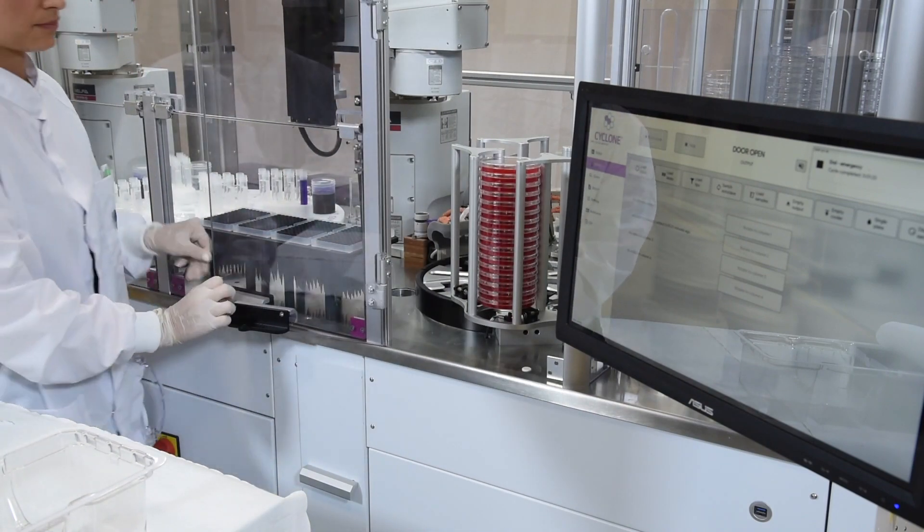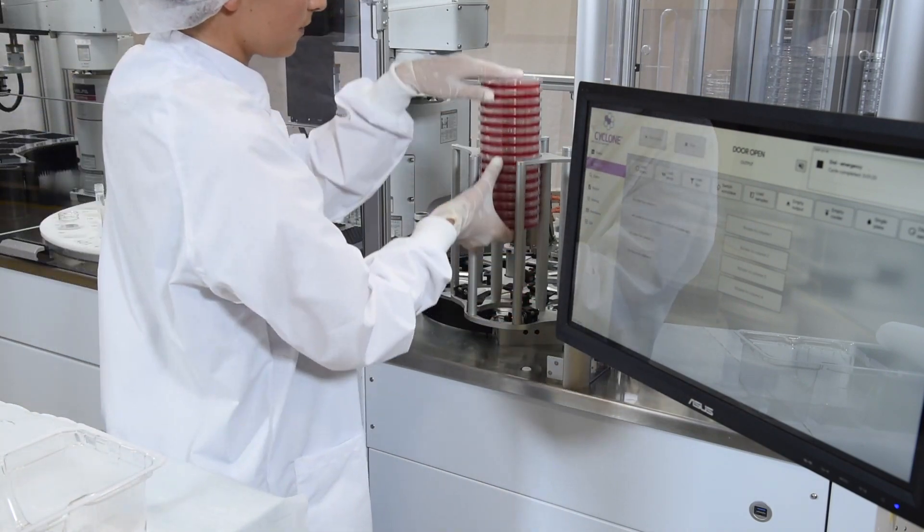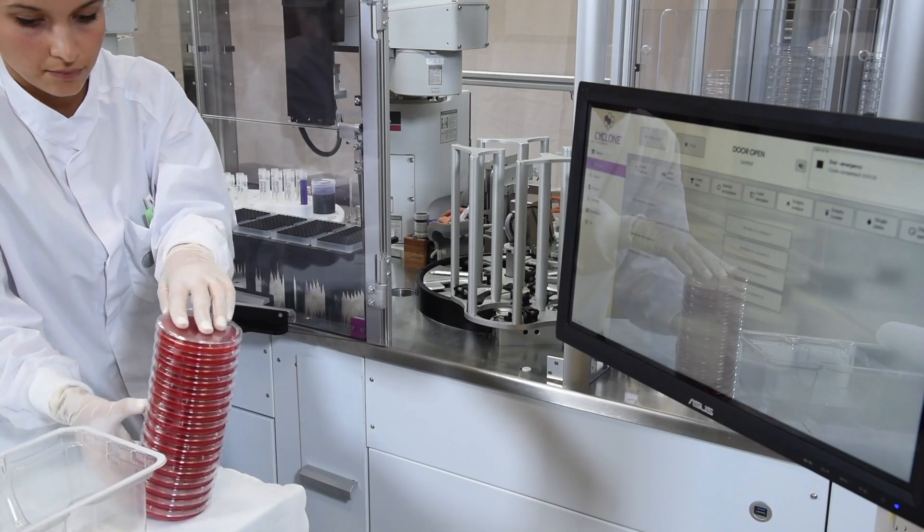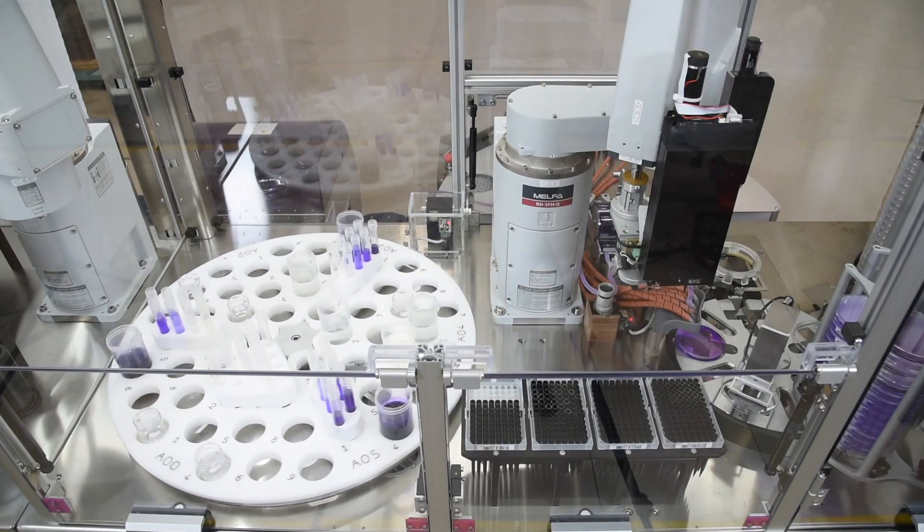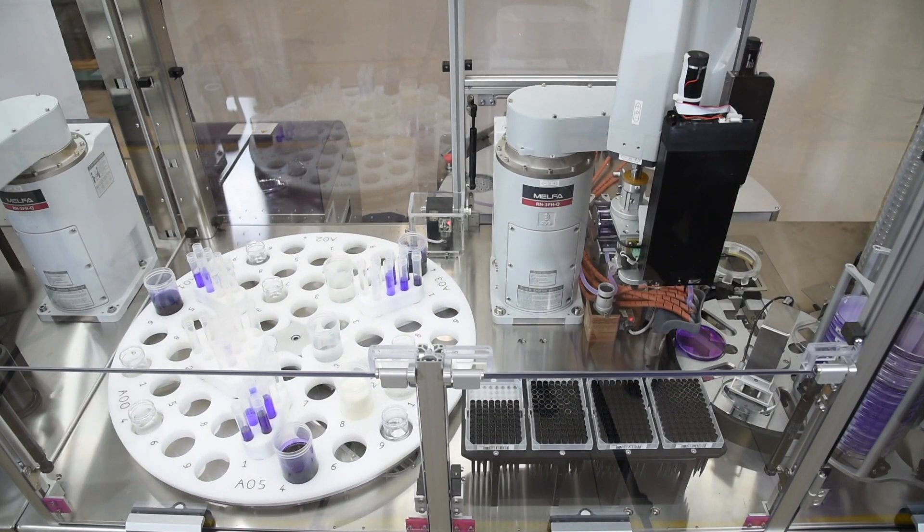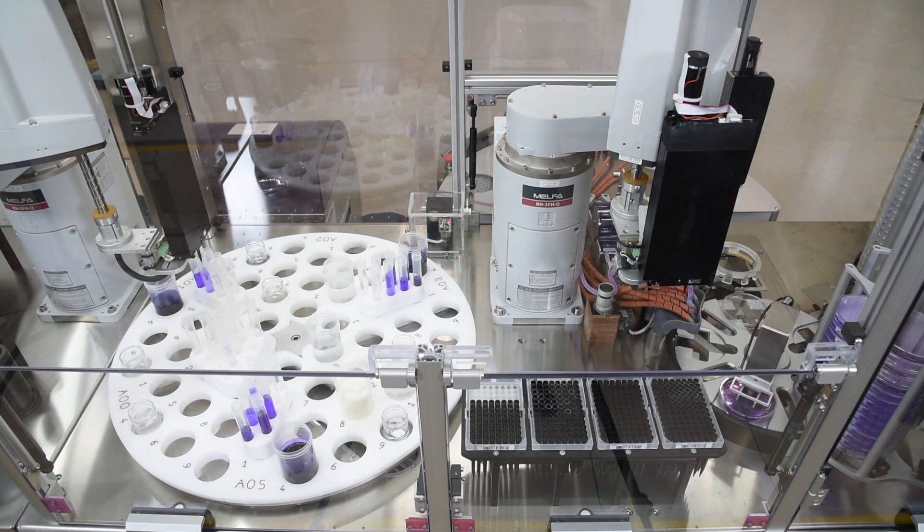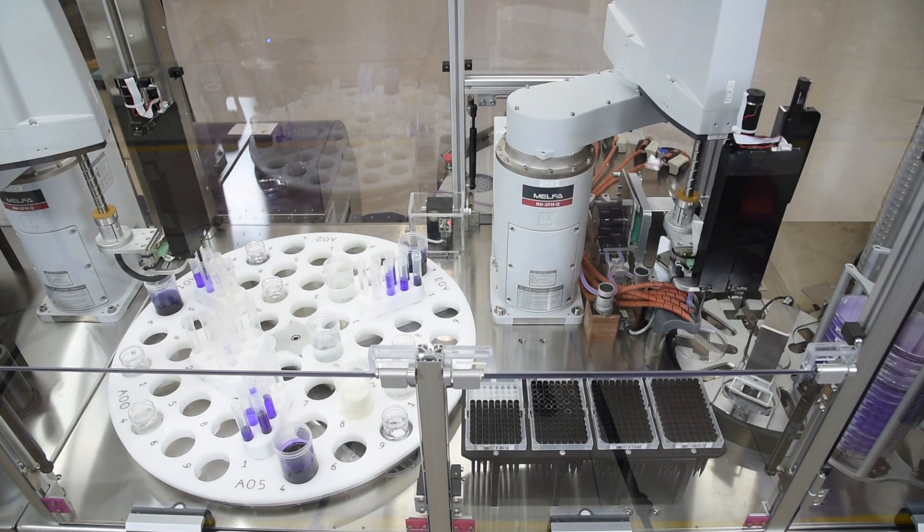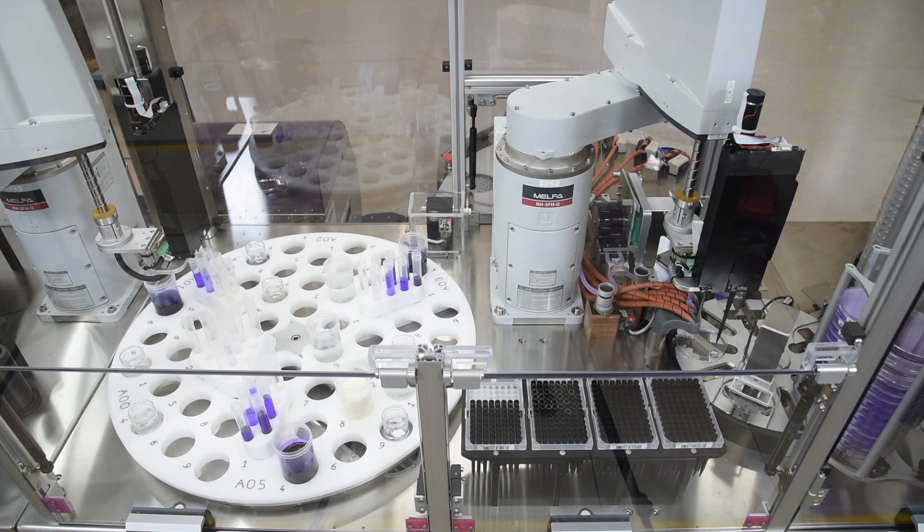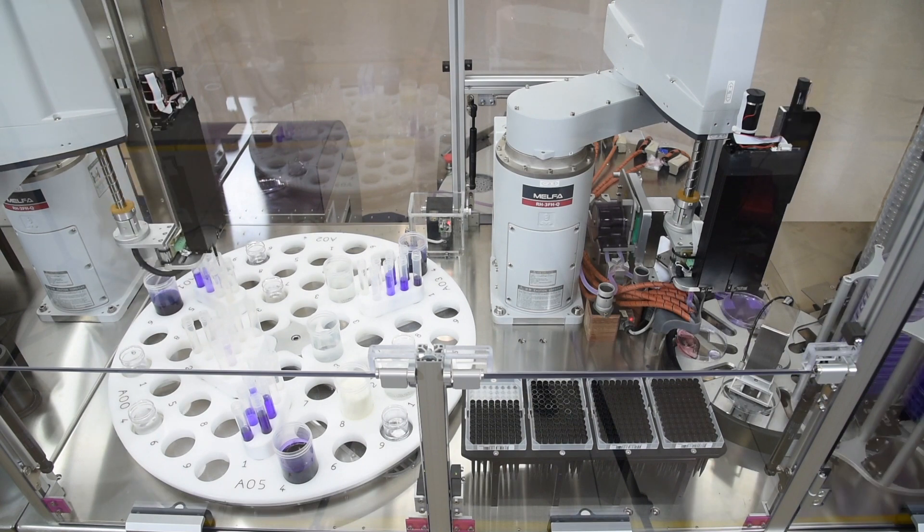Cyclone's HEPA-filtered workspace continuously circulates clean air within the instrument, protecting sample integrity. Built-in UV lights and easy-to-clean surfaces ensure proper environmental hygiene.